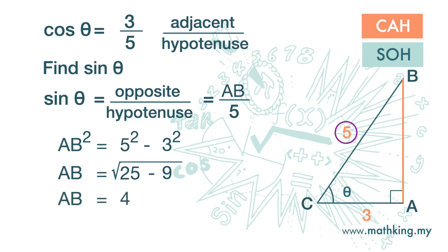We substitute that value into the equation, and we get sine theta is 4 over 5.